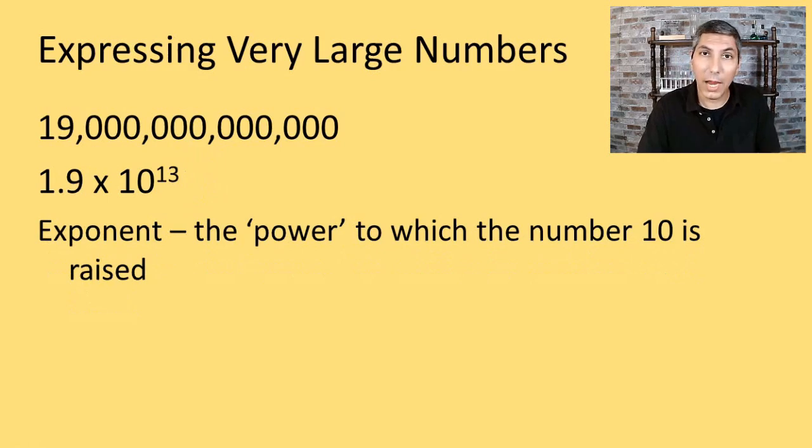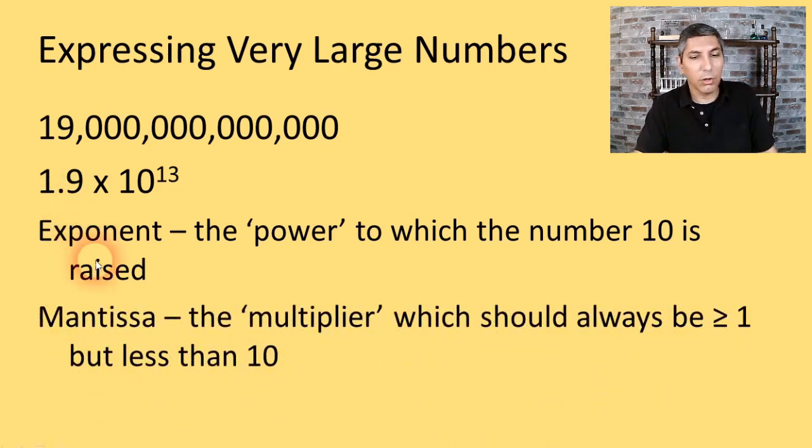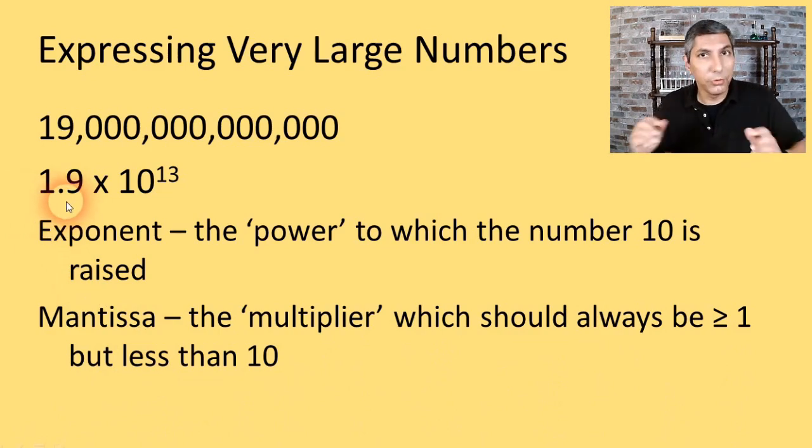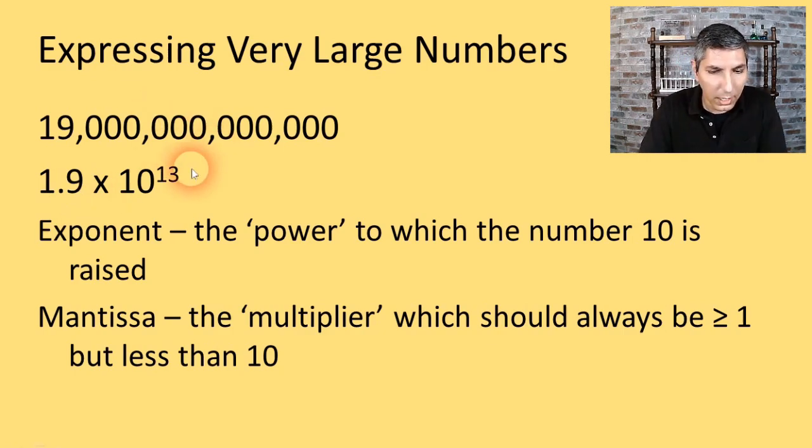Now there are some vocabulary words that are good to know. The exponent, this 13 right here, that's the power to which the number 10 is raised. That tells us how many decimal places the number in scientific notation is from the actual value of the number. And then we have this number out in front here. This is sometimes called the mantissa. Sometimes it's called the coefficient. That value is that multiplier out in front that should always be greater than or equal to 1 and it should always be less than 10 as well. So we have some vocabulary for these scientific notation numbers.